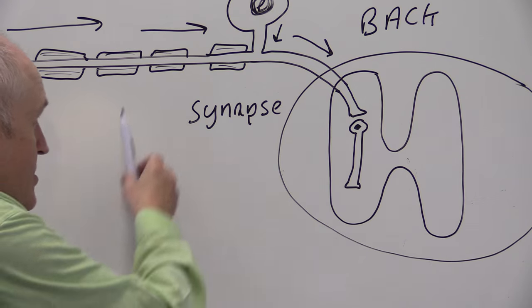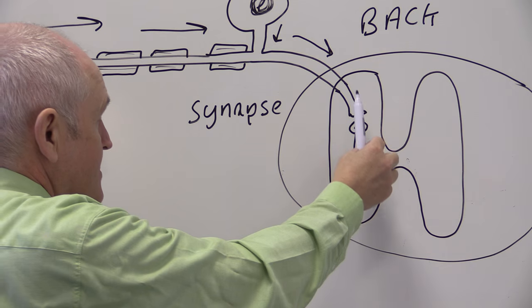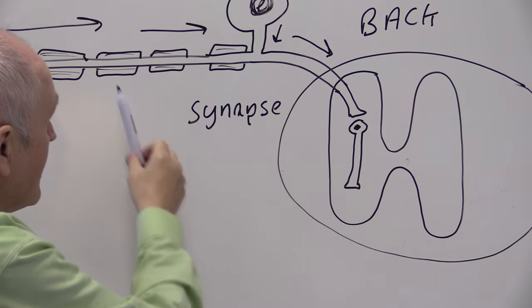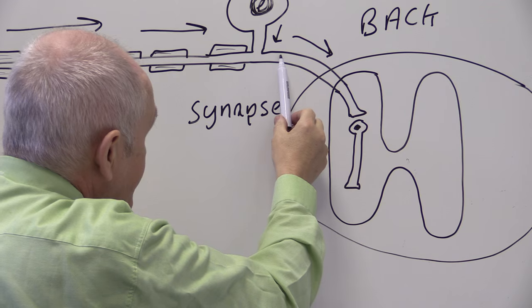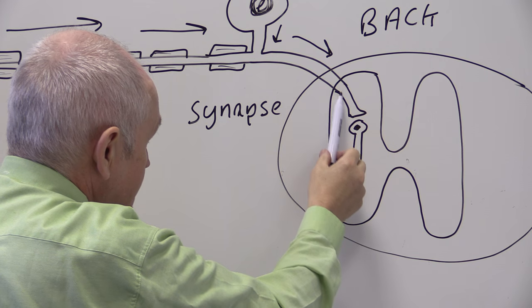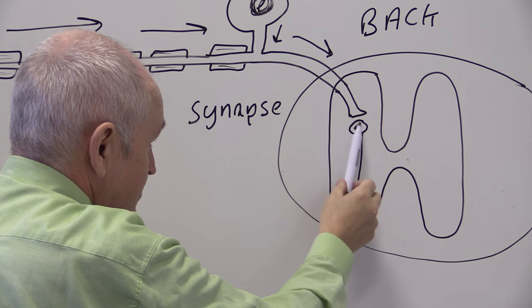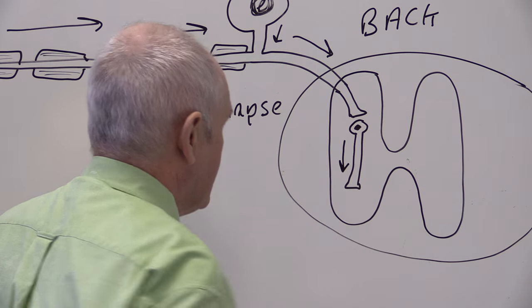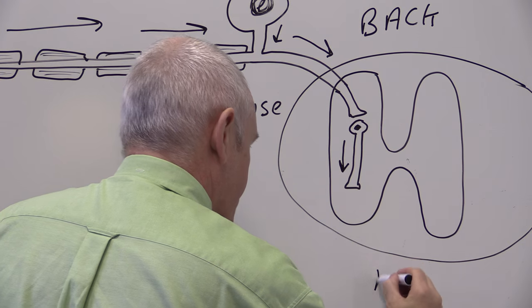So the impulse has come along here. Suppose we touch something really hot and we want to withdraw our hand. The impulse goes along the axon of the sensory neuron, synapses with the relay neuron, and then the impulse travels through the gray matter and it reaches the front.